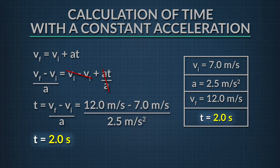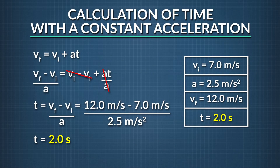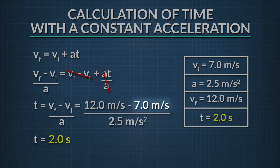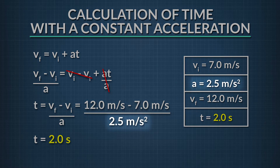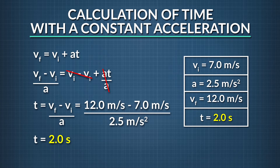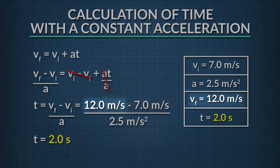Did you get 2.0 seconds? If so, great job. If not, let's take a look at the solution together. The first thing we wanted to do was create a data table with the variables that we were given, as well as what we were solving for. We knew that the car was traveling at 7.0 meters per second — that was its initial velocity. We also know the acceleration was constant at 2.5 meters per second squared. The question also tells us that the final velocity was 12.0 meters per second, and we needed to solve for the time.